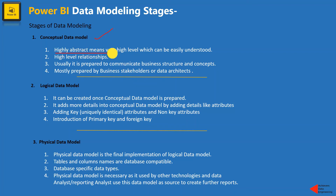In the conceptual data model, the data is at a very high level so we can easily understand it. We define high-level relationships, and it is usually prepared to communicate business structure and concepts. Because it's very high level, it is mostly prepared by business stakeholders or architects. For example, if you are getting a new project to start with Power BI reports, stakeholders might already come up with some conceptual data model — maybe in a flowchart — and share it with you when you are going to work on some reports.